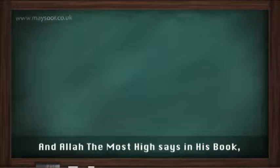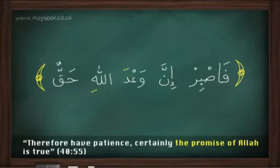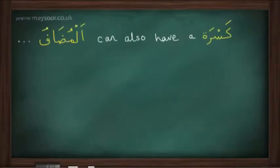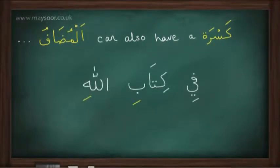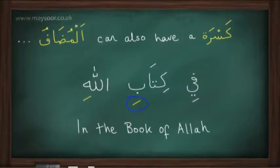Allah the Most High says in His book: 'Therefore have patience, certainly the promise of Allah is true.' In this example we can see that al-mudaf wa'da ends in a fatha, because inna came in front of it and affected it. We can also see al-mudaf take a kasra, as in 'fi kitabillahi,' which means 'in the book of Allah.' The last vowel of al-mudaf has changed from a dhamma to a kasra because of the harf al-jar 'fi' that came in front of the mudaf. For more information regarding the huruf al-jar, please refer back to lesson number 5.